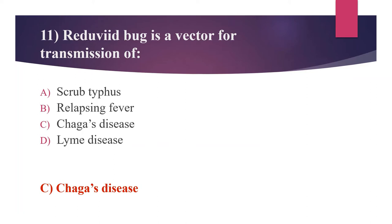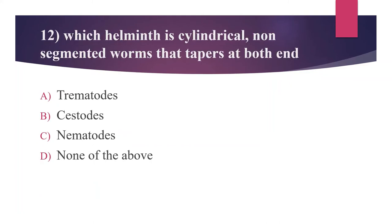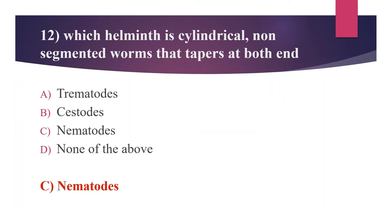The twelfth question: Which helminths are cylindrical, non-segmented worms that taper at both ends? Option A: Trematodes. Option B: Cestodes. Option C: Nematodes. Option D: None of the above. The answer is Option C, nematodes. Trematodes are dorso-ventrally flattened and leaf-like in shape; examples include Fasciola hepatica, Paragonimus westermani, and Fasciolopsis buski. Cestodes, commonly called tapeworms, have a tape-like segmented body; examples include Taenia solium, Taenia saginata, and Diphyllobothrium latum. Nematodes are cylindrical, non-segmented worms tapering at both ends; examples include Ascaris lumbricoides and Enterobius vermicularis.